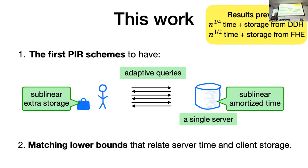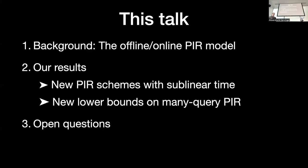In addition, we also give some new lower bounds on multi-query PIR. These lower bounds relate the server time with the client storage, and they match our most efficient FHE-based construction, showing that this construction is in fact optimal when it comes to this trade-off. In the rest of this talk, I'll give background on the specific types of PIR schemes we construct, walk through our new PIR schemes with sublinear amortized server time, present our new lower bounds on many-query PIR, and leave you with some open questions. Feel free to stop me at any point with questions.